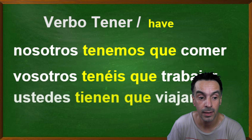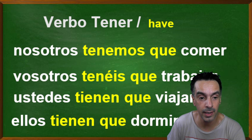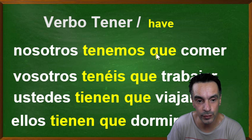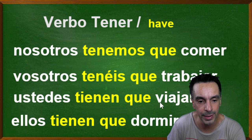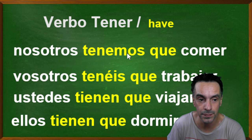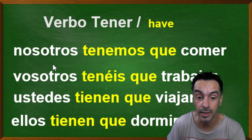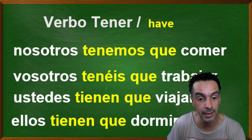Ustedes tienen que viajar, ellos tienen que dormir. In 'have to' plural: nosotros tenemos que — have to eat. The next verb comes out in the infinitive. You don't need to conjugate it because you've already conjugated the first verb, tener. So: nosotros tenemos que comer, vosotros tenéis que trabajar, ustedes tienen que viajar, ellos tienen que dormir.